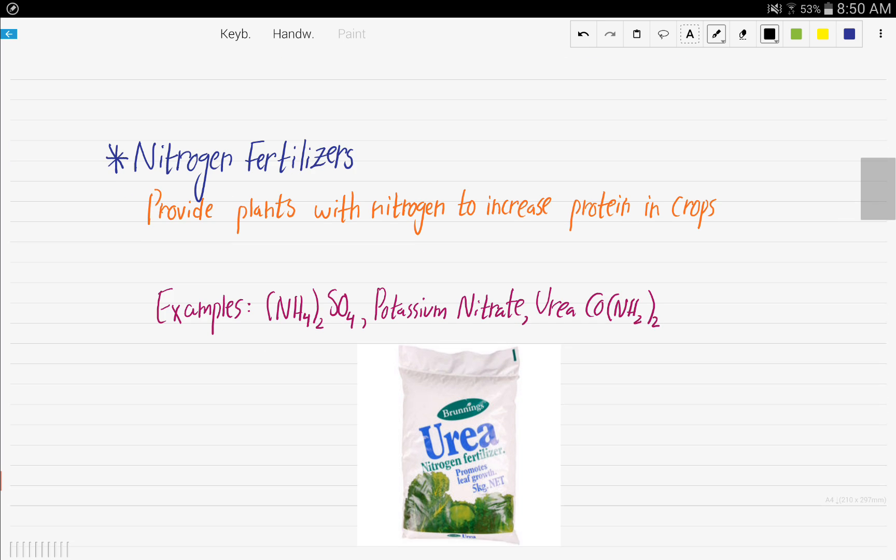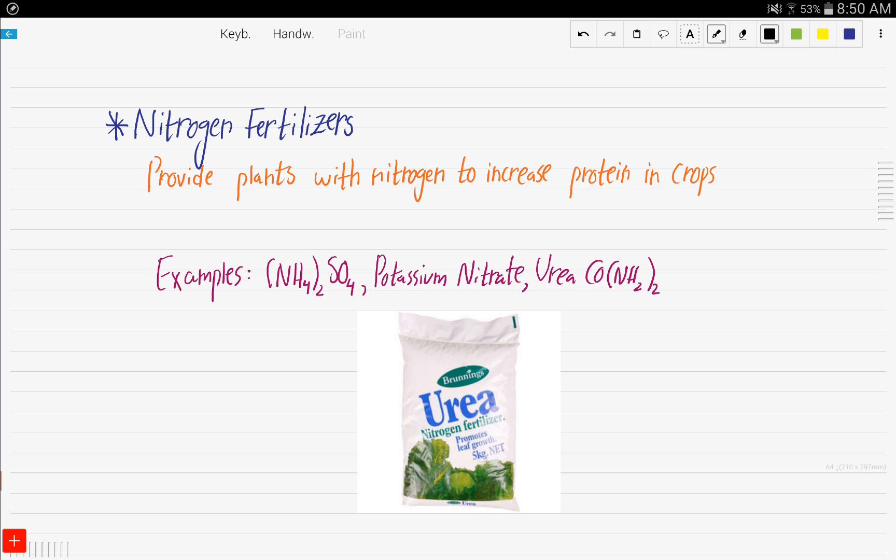Now, let's see the importance of nitrogen fertilizers. Nitrogen fertilizers provide plants with nitrogen to increase the protein in crops. So that's really important. Some examples of nitrogen fertilizers include ammonium sulfate, as you can see here is the nitrogen, potassium nitrate, and urea. Here it contains nitrogen.